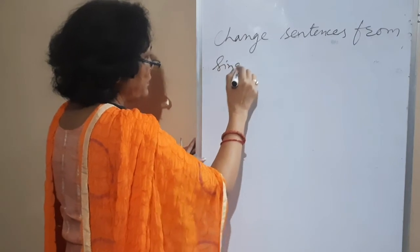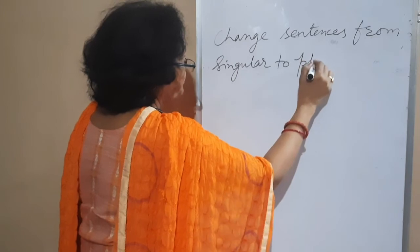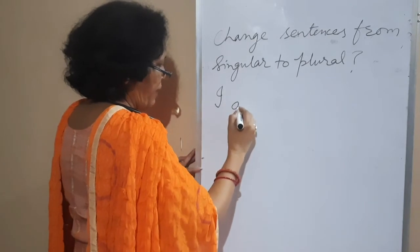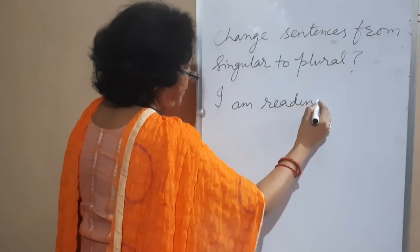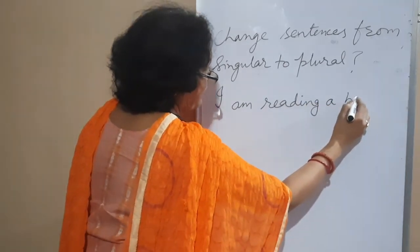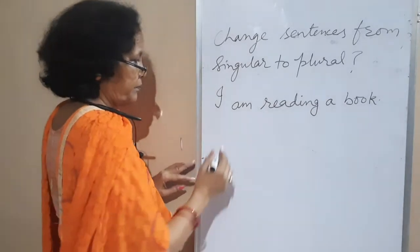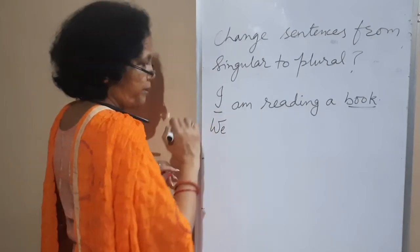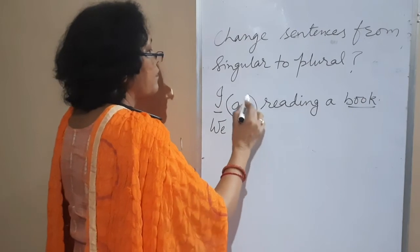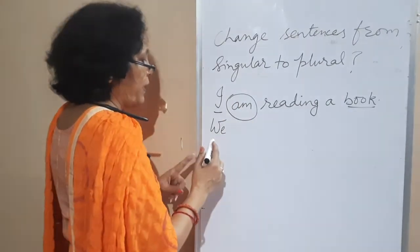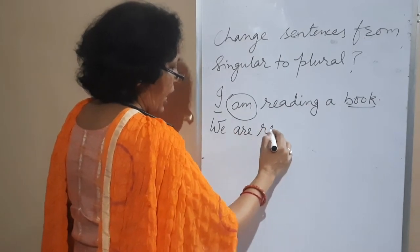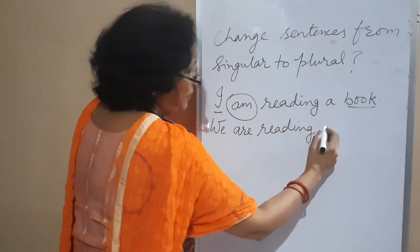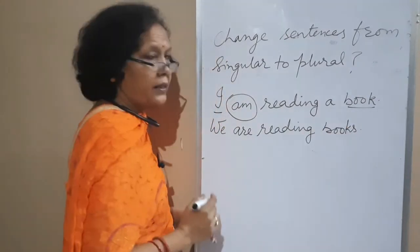Now, singular to plural. Example: 'I am reading a book.' The plural of I is we. With I we use 'am,' but with we we use 'are.' And book changes to books. So the plural sentence becomes: 'We are reading books.'